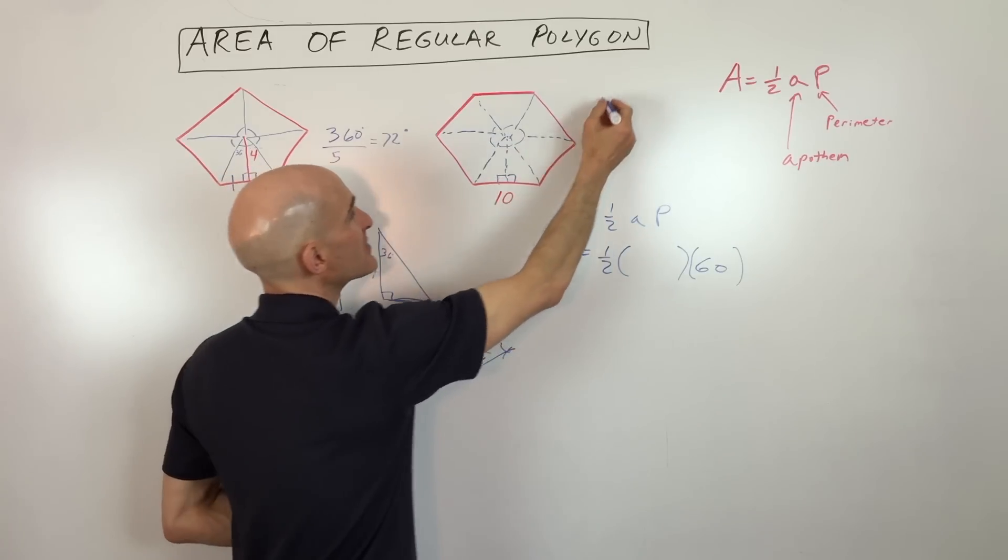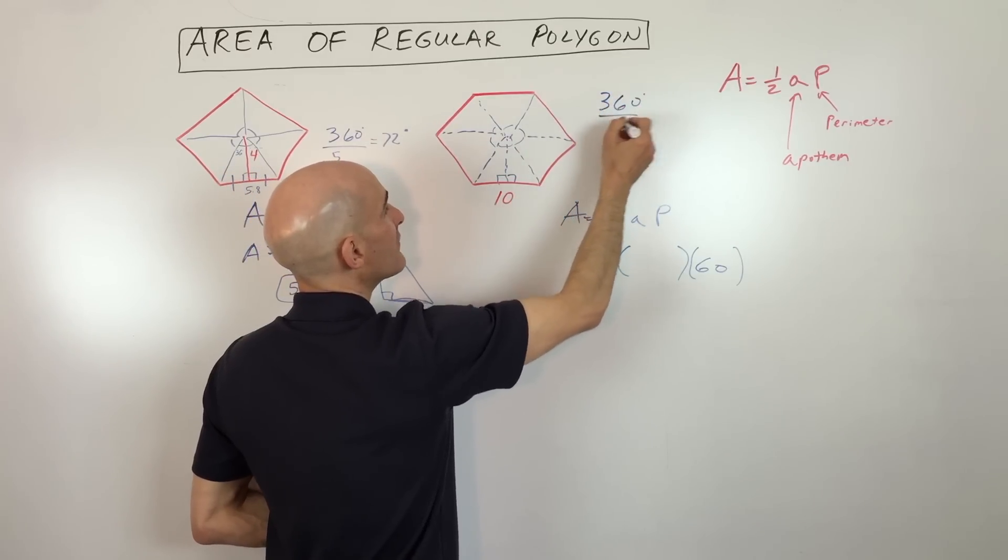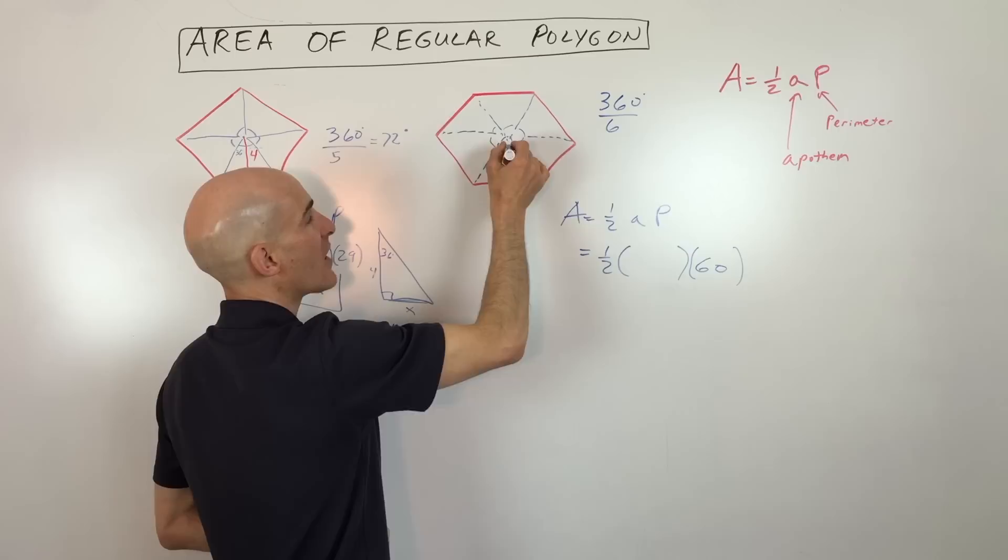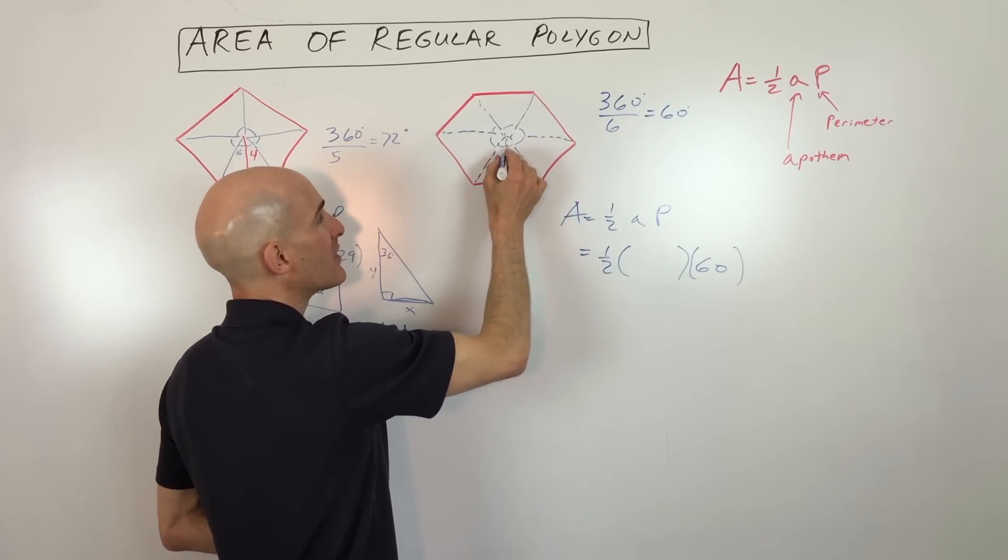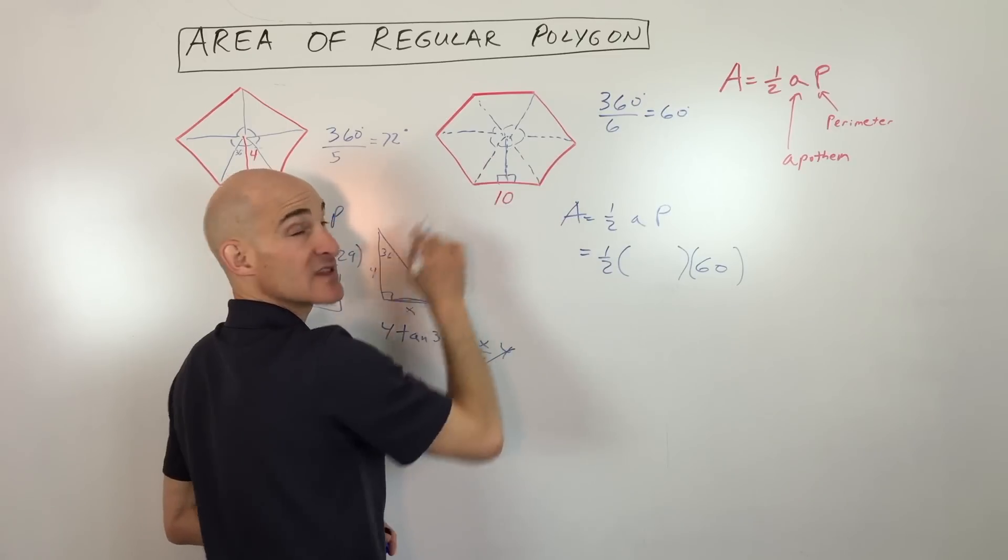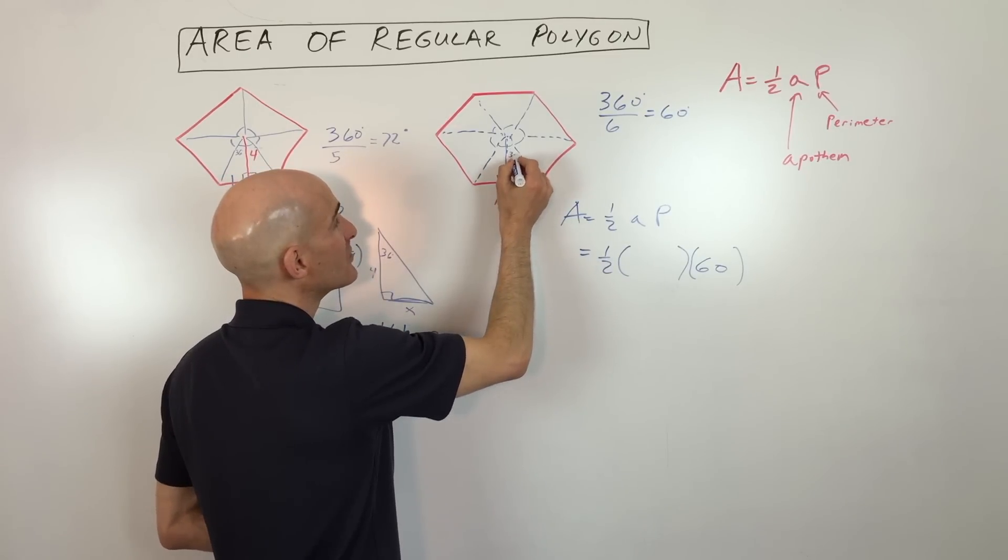So we're going to take 360 divided by 6. And so you can see we have six triangles. So that's going to be 60. And then when we drop that apothem right here, this is going to split this angle in half. So each of these guys is going to be 30 degrees.